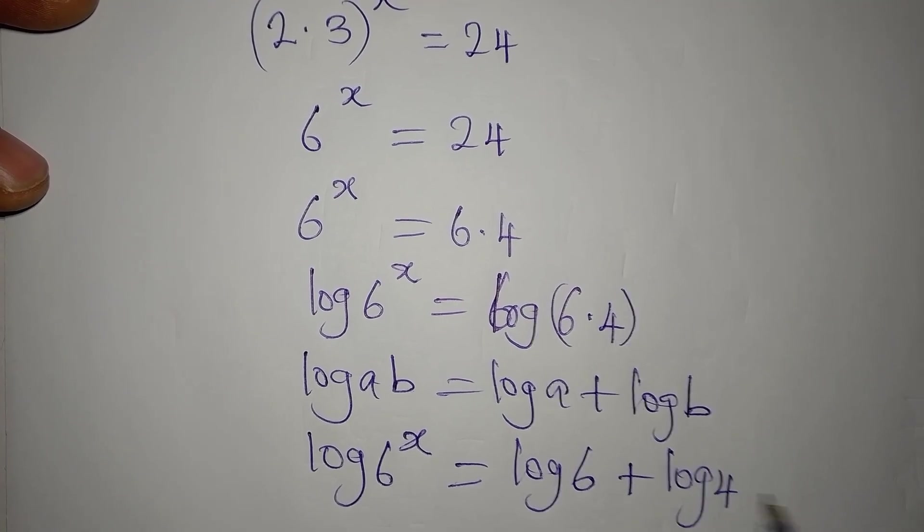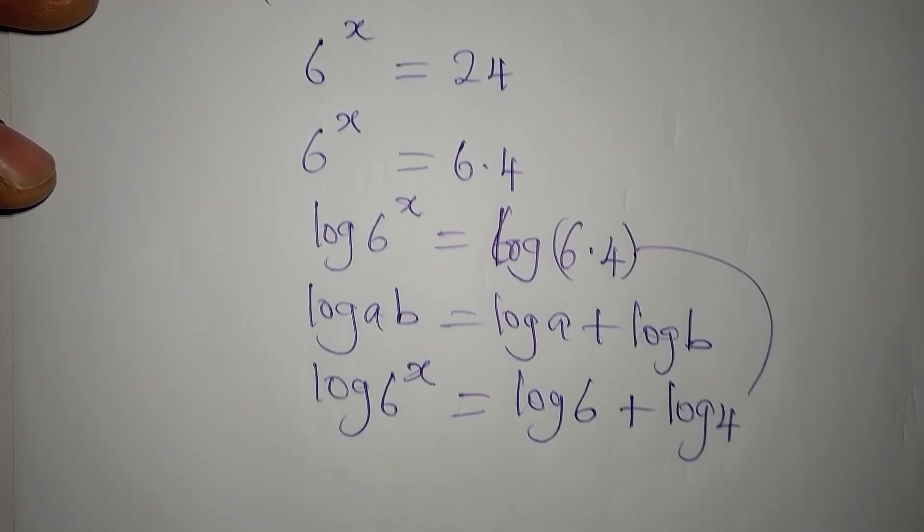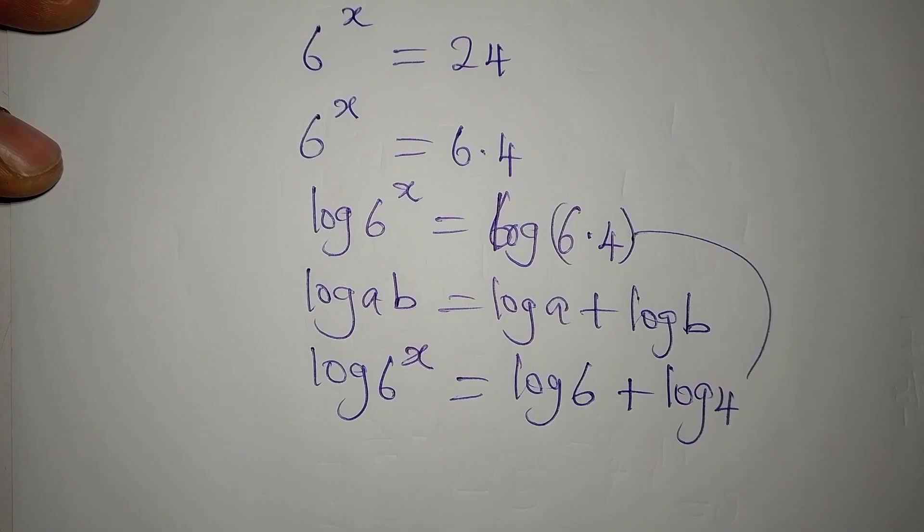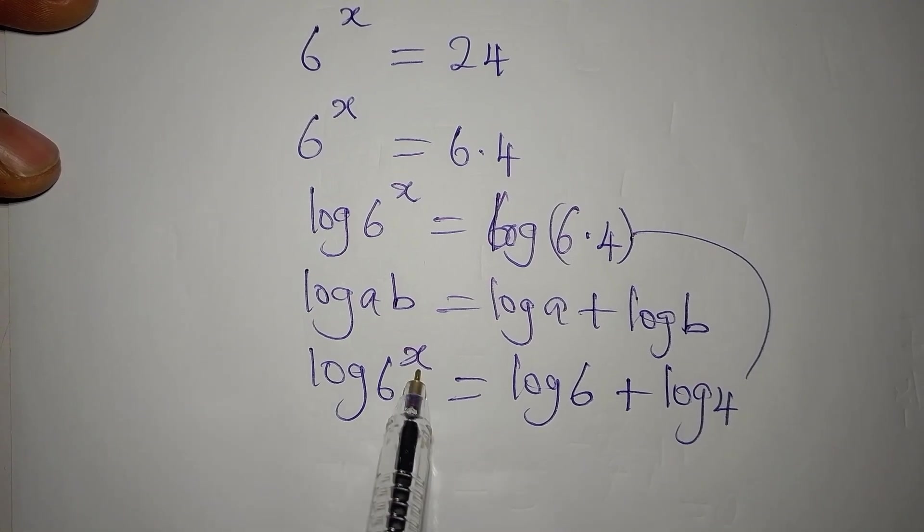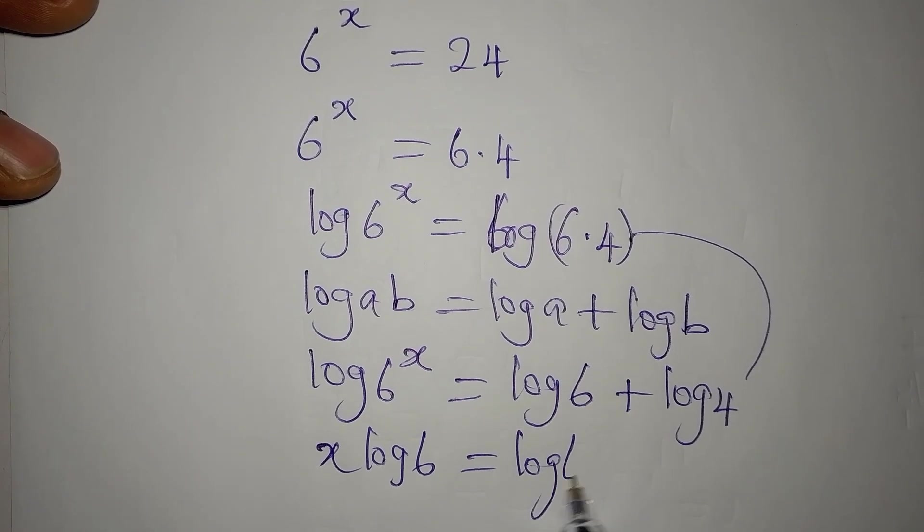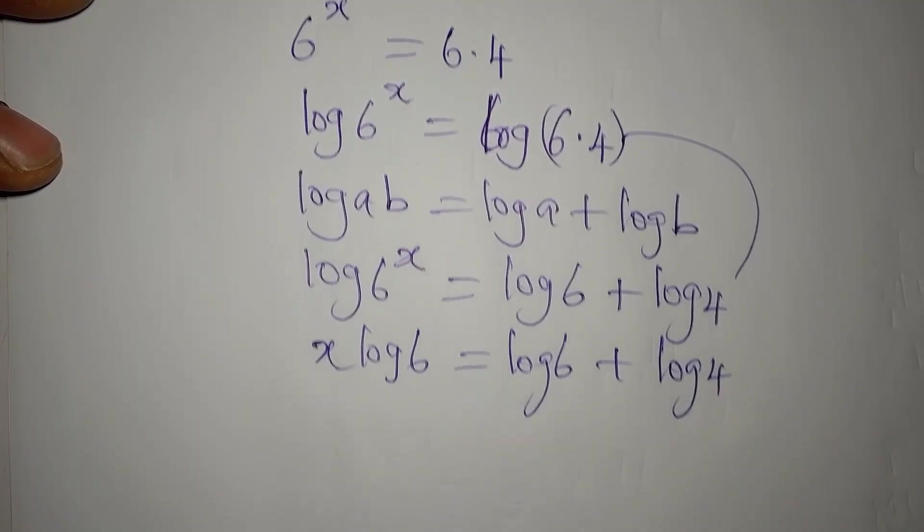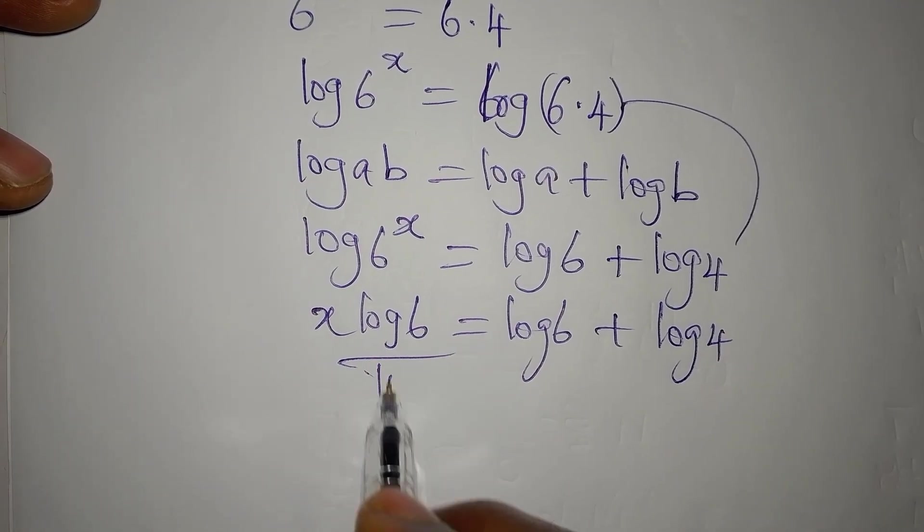Now what do we do? The power here will go in front, so we have x log 6 equal to log 6 plus log 4. From here we divide both sides by log 6.